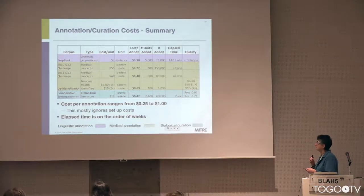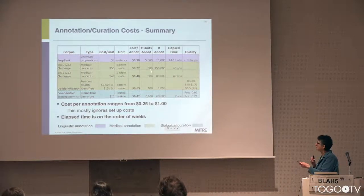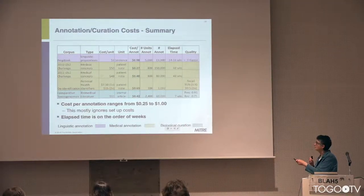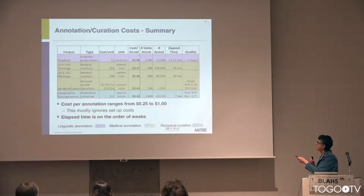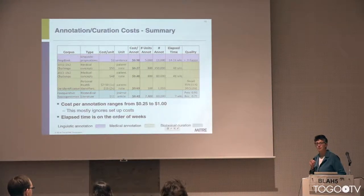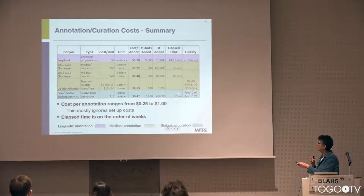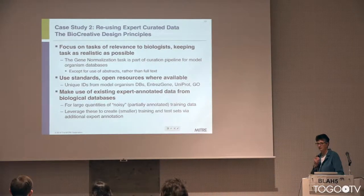Here's a summary of cost data across several annotation activities: PropBank linguistic annotation, two I2B2 datasets, the de-identification work, and the Comparative Toxicogenomics Database. The cost varies from about 27 cents to about a dollar per annotation per entity. The time ranges from about seven weeks at the fastest — a very efficient pipeline — to nearly a year, and it's unclear whether all figures include setup costs.